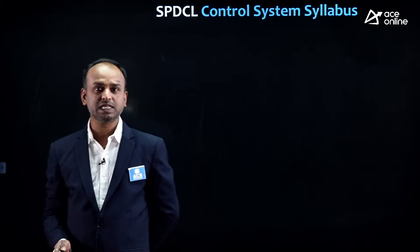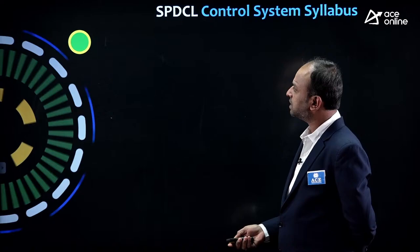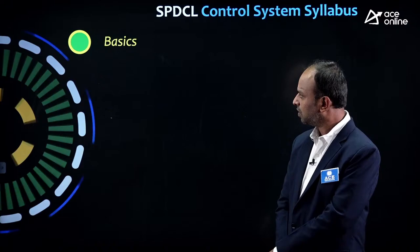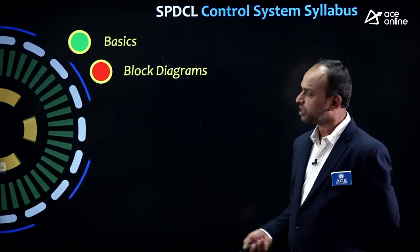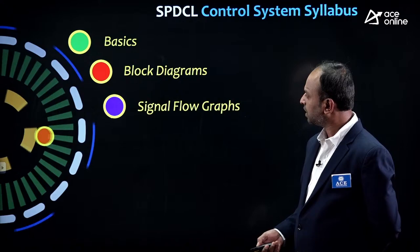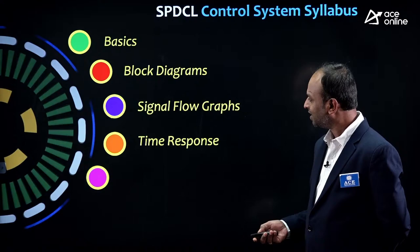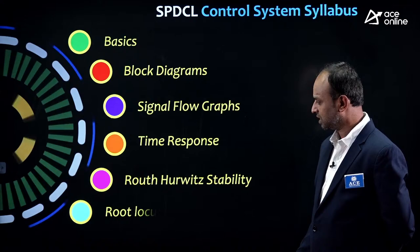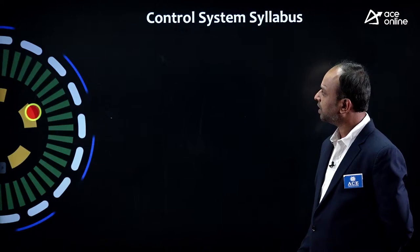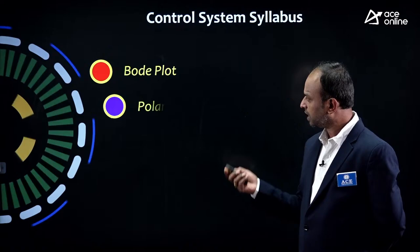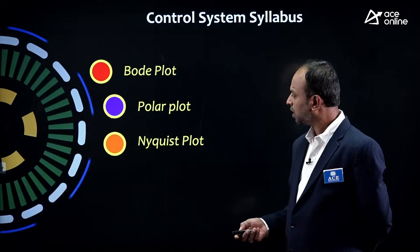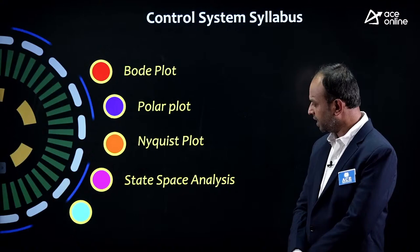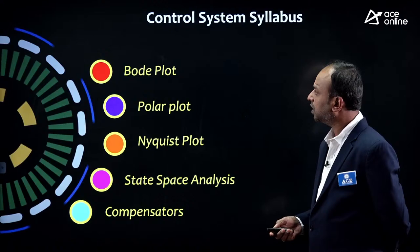Coming to the SPDCL control system syllabus, the chapters include: Basics, Block Diagrams, Signal Flow Graph, Time Response Analysis, Routh-Hurwitz Stability Method, Root Locus, Bode Plot, Polar Plot (Nyquist Plot), State Space Analysis, and the last chapter — Compensators and Controllers. This is the complete control system syllabus given by SPDCL.